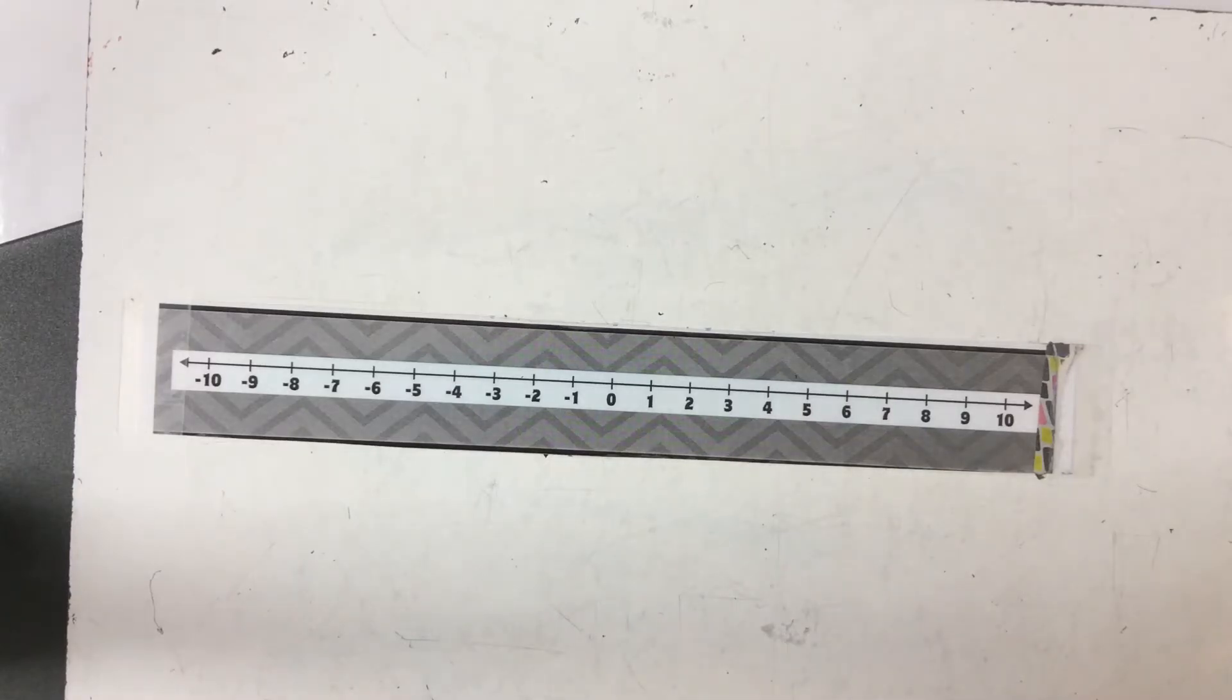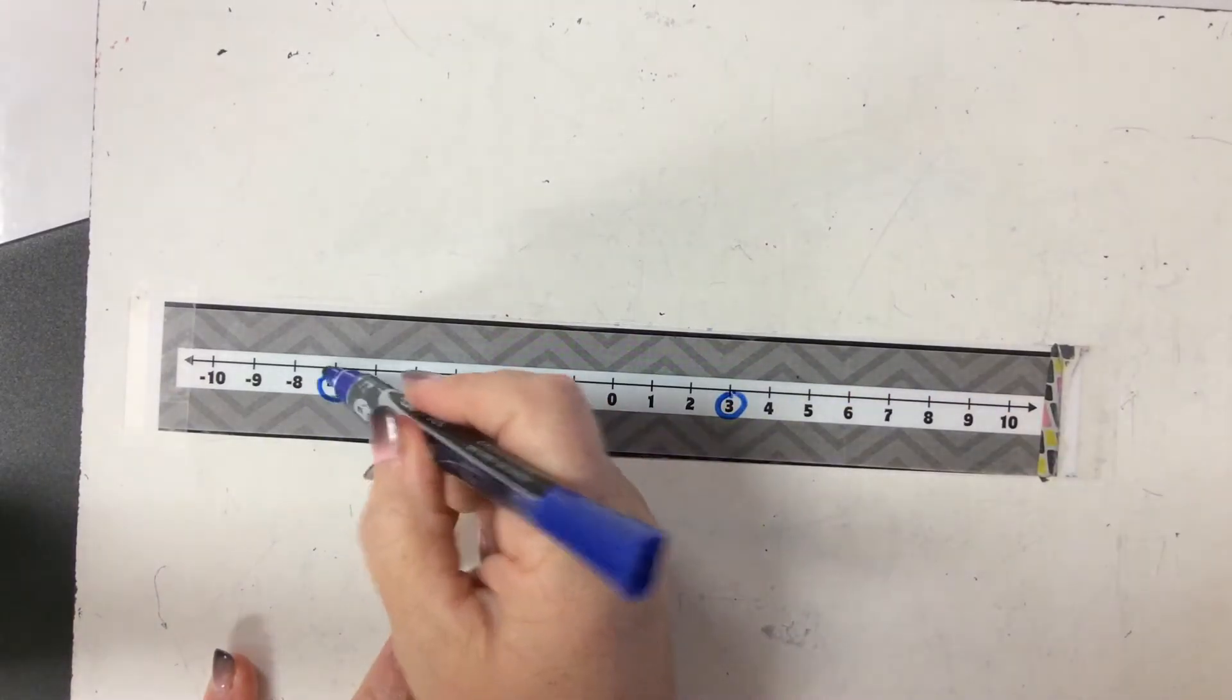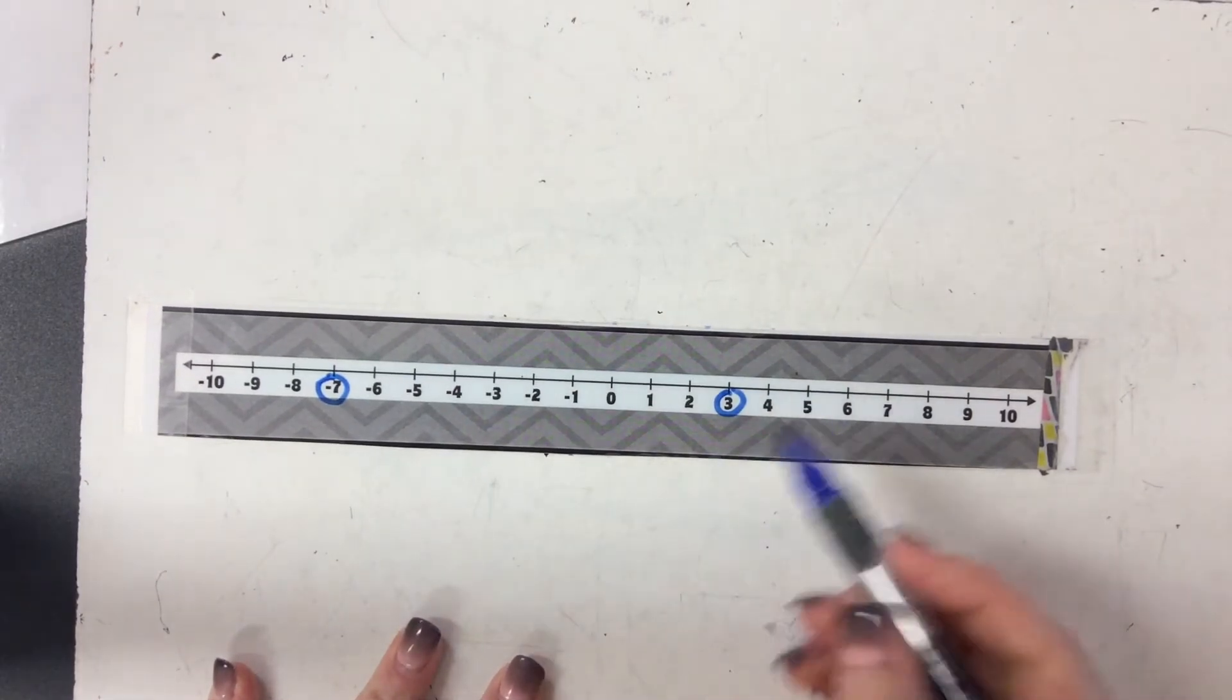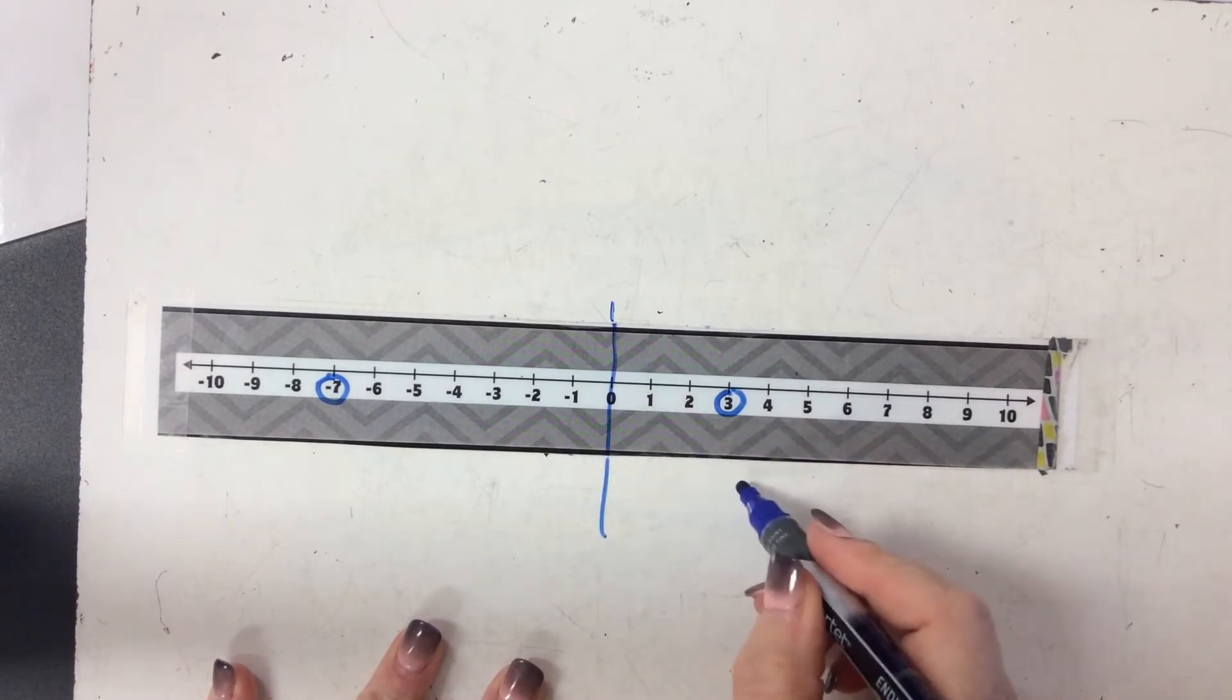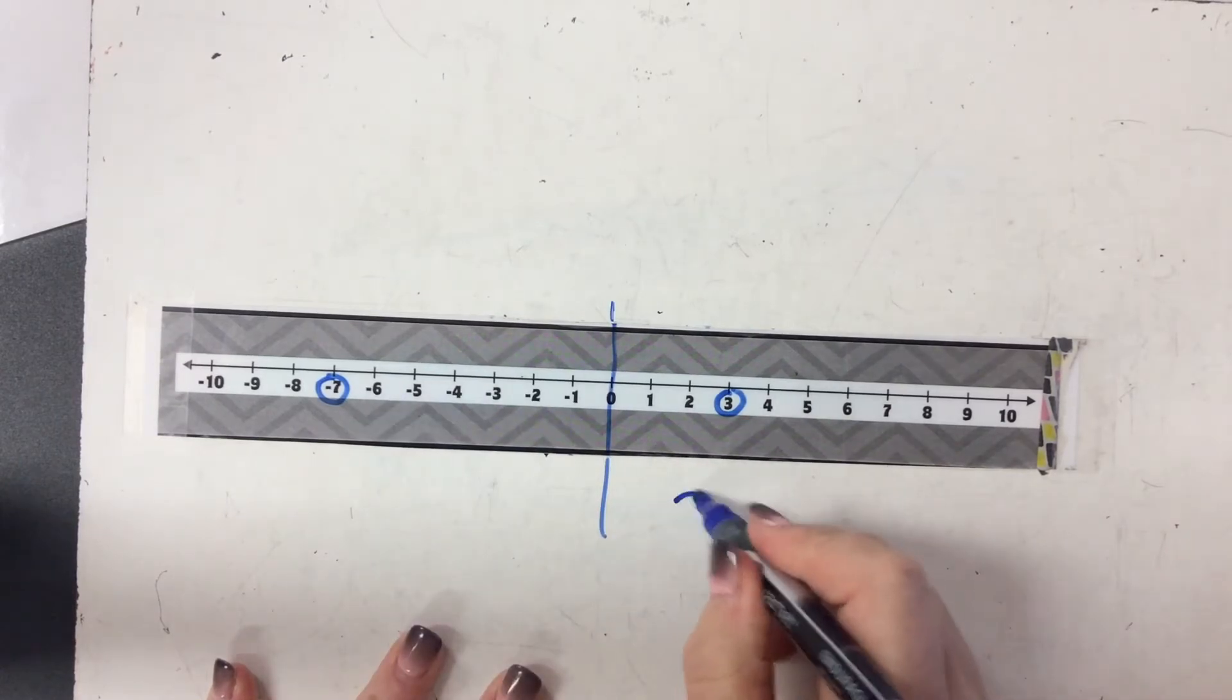Okay, our next problem says use less than or greater than to complete the sentence: three is blank compared to negative seven. Is that a less than or greater than or an equal to? Well, remember the numbers on the right of zero are larger, so this has to be bigger than this one, right?